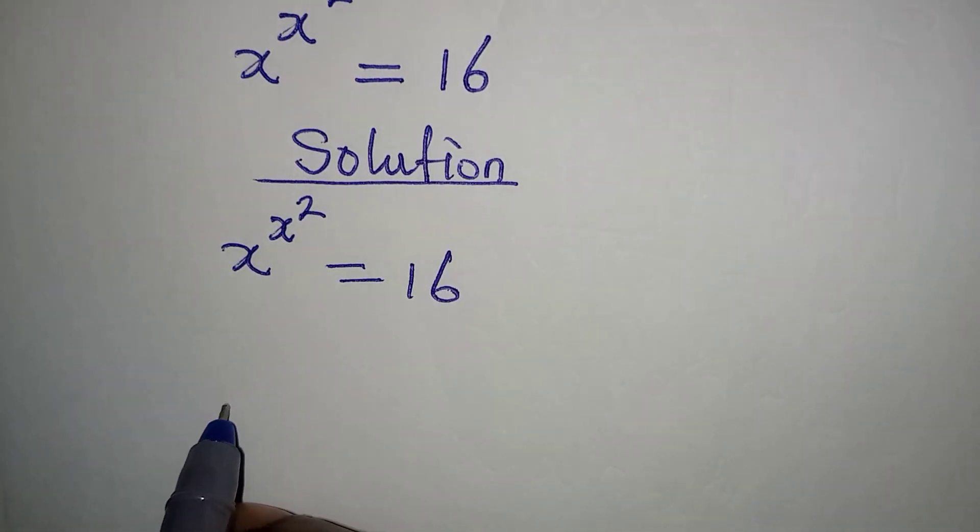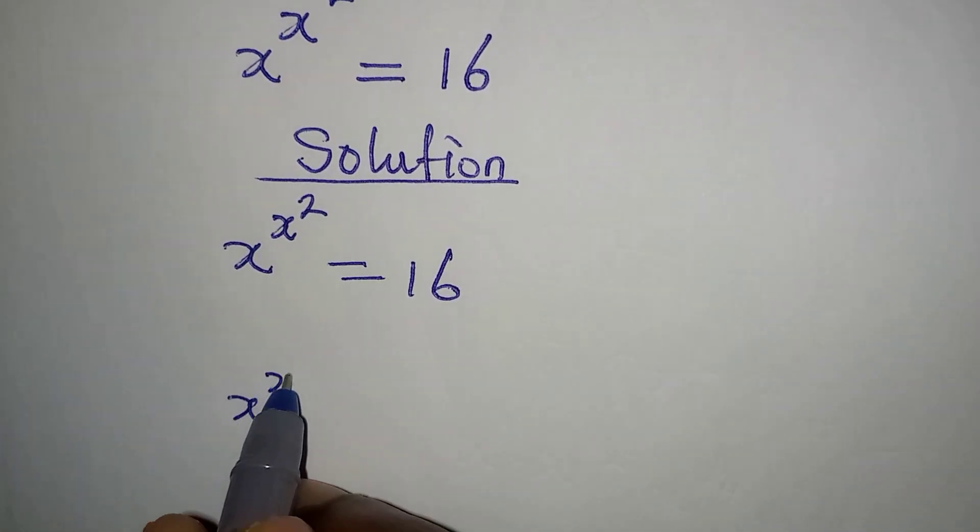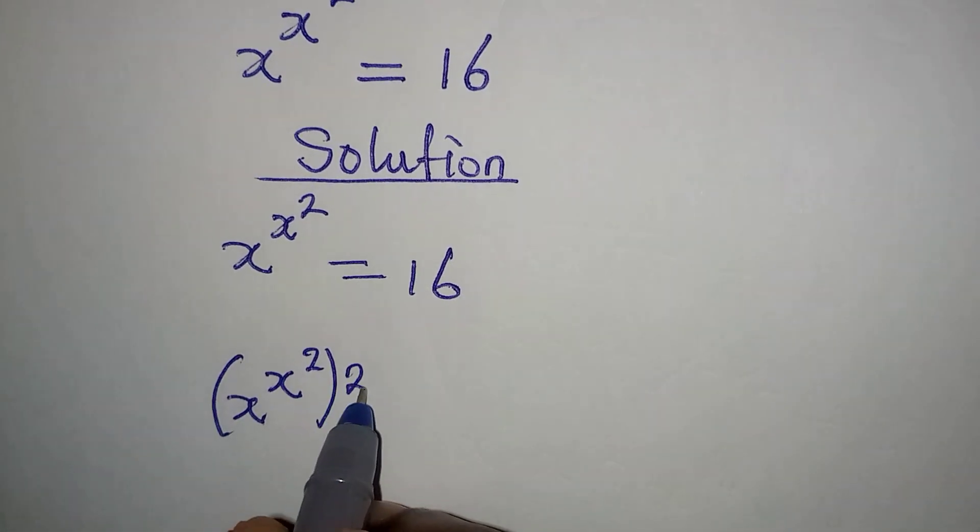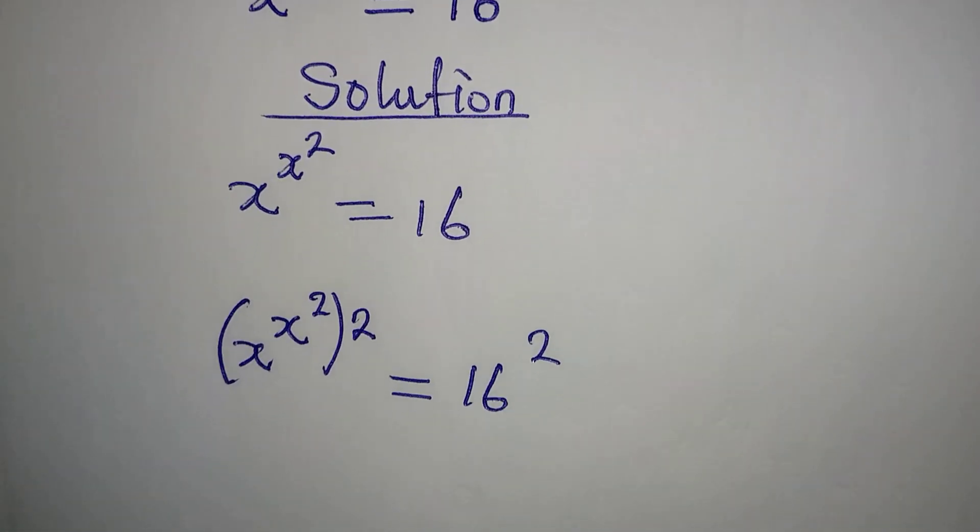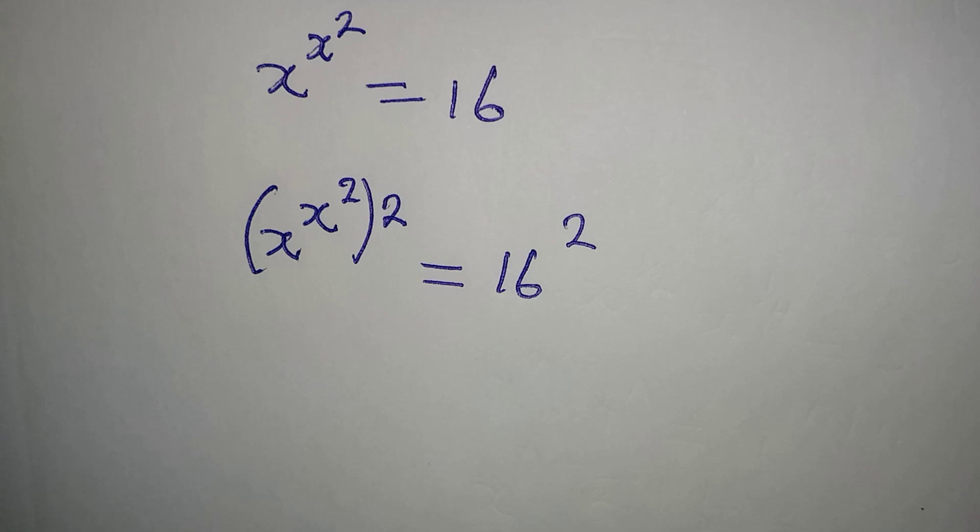So if I do that, I have x to the power of x squared, then I will square this, and on the right I have 16 to the power of 2.